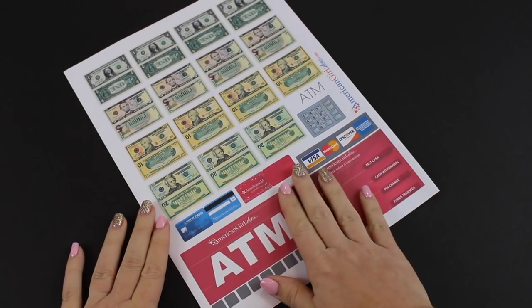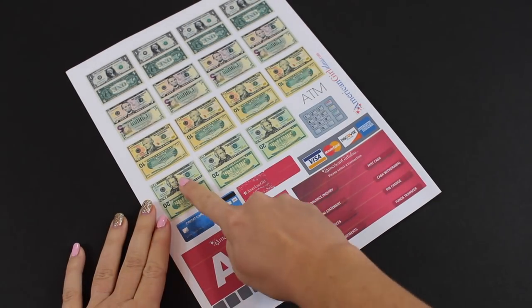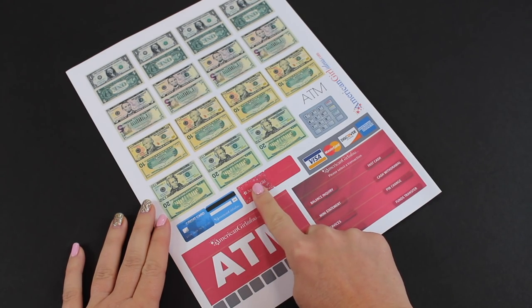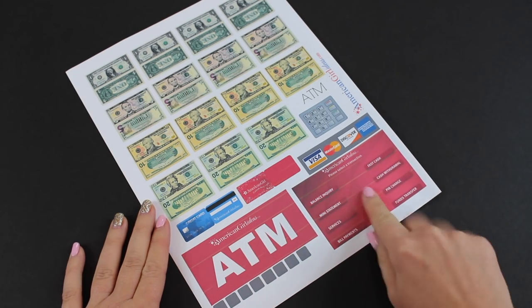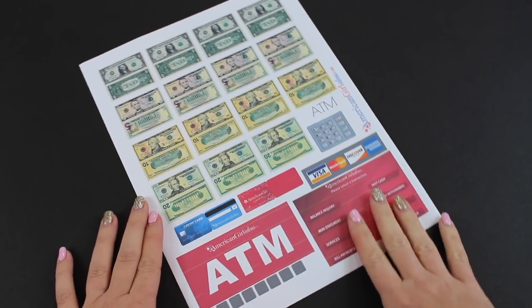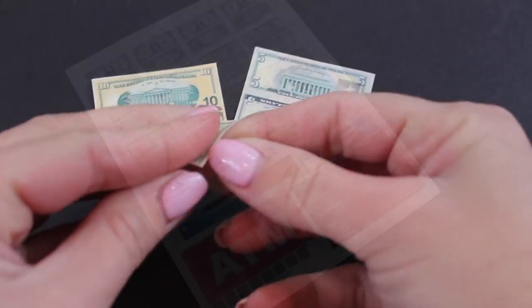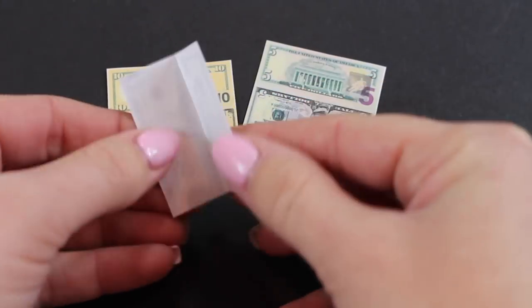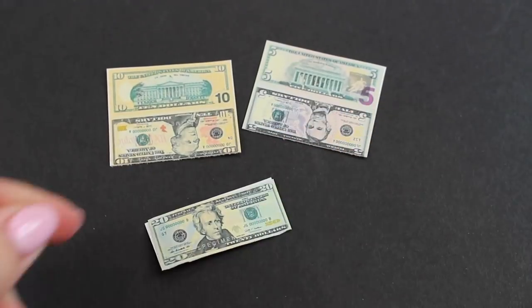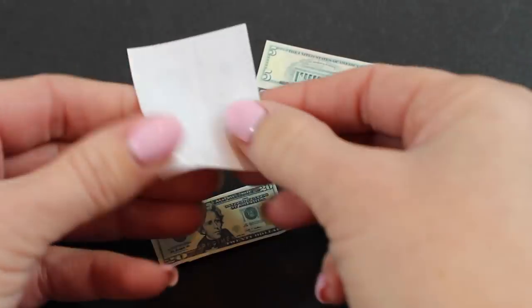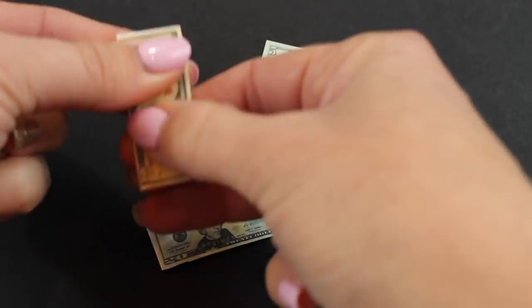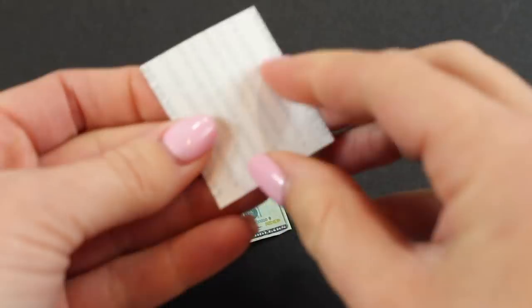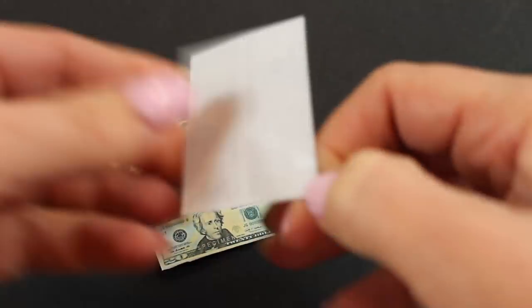You can find these ATM printables on our blog, americangirlideas.com. Click on the post and underneath materials needed, you can click on the link. Print out your money and all the signs. We're using sticker paper. That way we can just fold the money in half and it has a front and a back. The same for the credit cards. If you don't have sticker paper, a glue stick will hold it in place just the same.